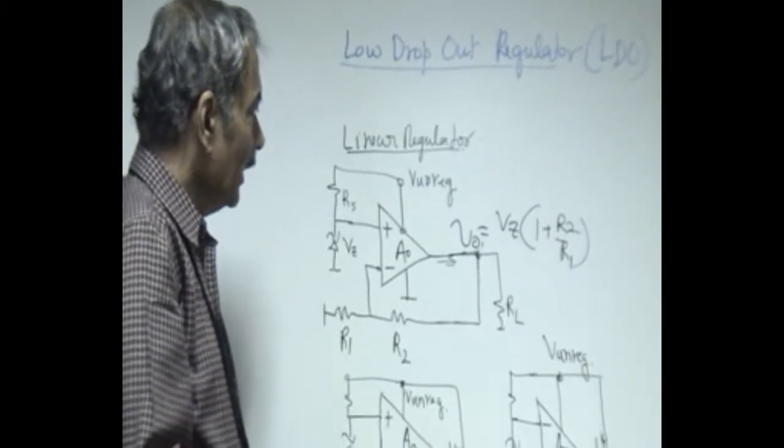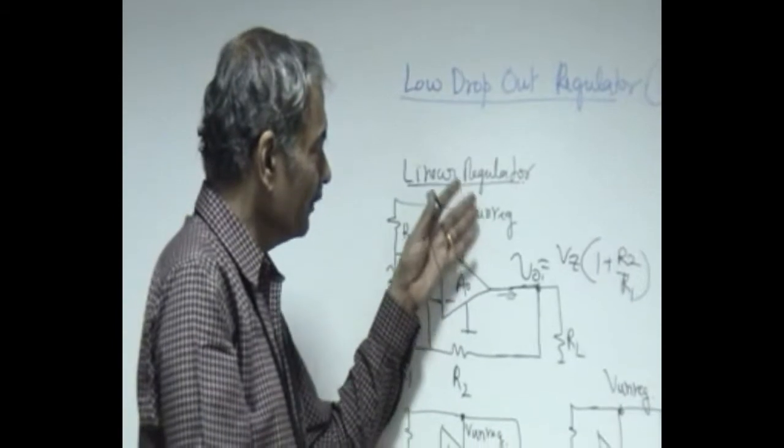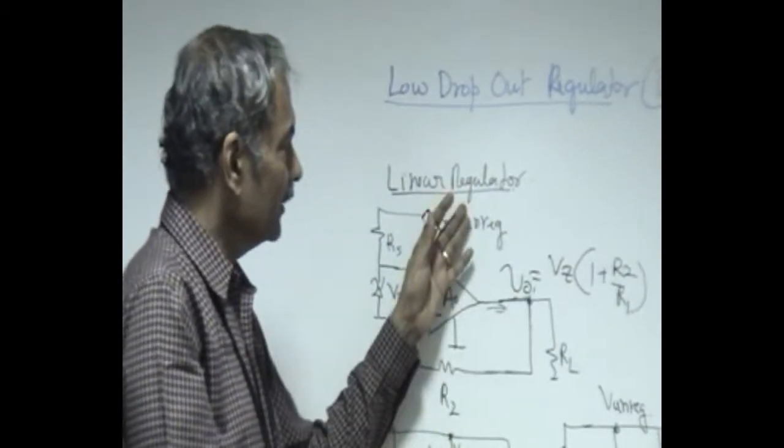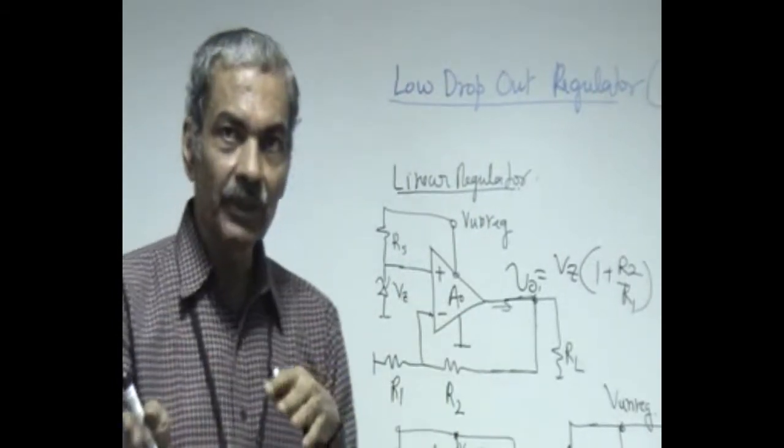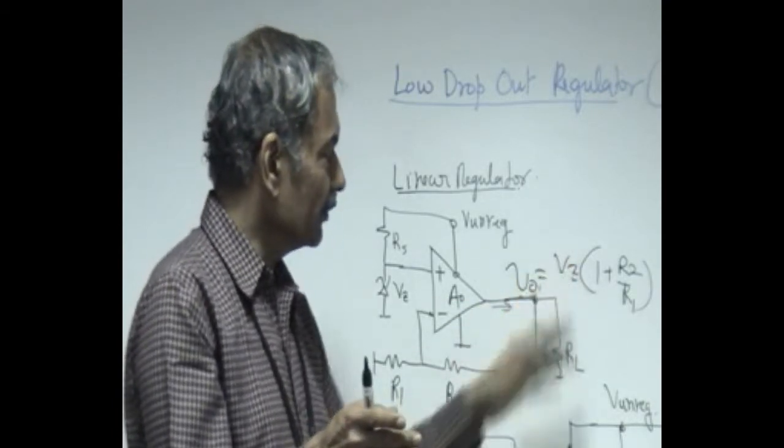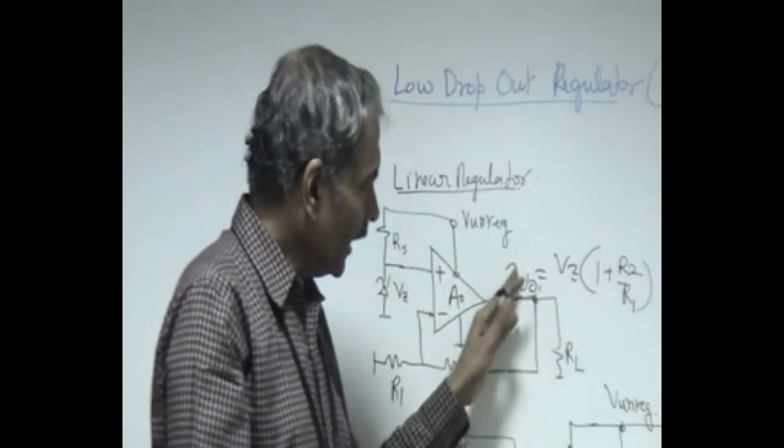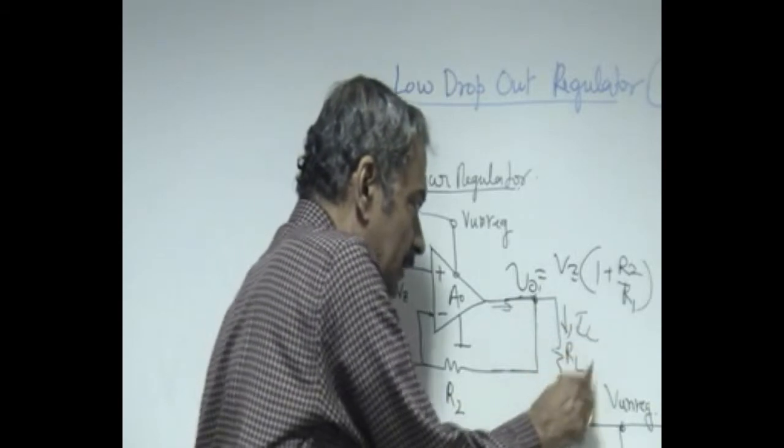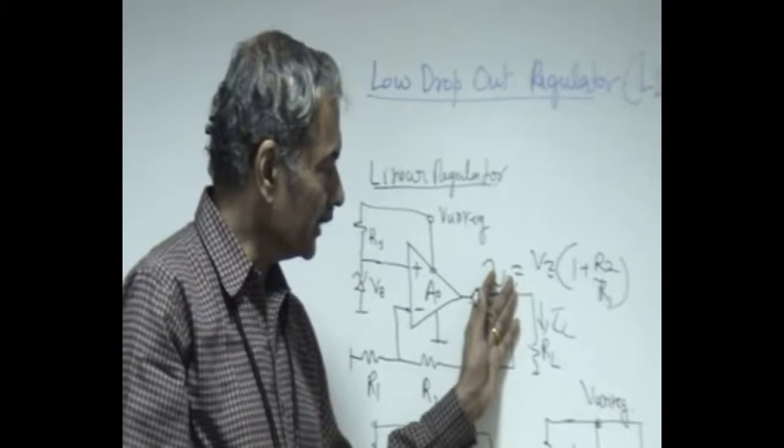Now we have to investigate the line regulation, which means how this remains constant independent of the unregulated voltage changing from a minimum to a maximum value. The percentage change in the output voltage is called line regulation factor. Load regulation is, as the load current is varied from its minimum to a maximum, what is the percentage variation in the output voltage.